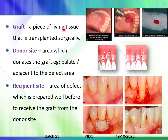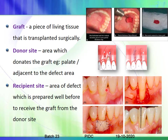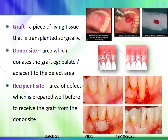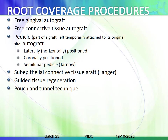A graft is a piece of living tissue that is transplanted surgically — for example, a small piece of living tissue transplanted from the palatal area to the site which is needed. The donor site is the area where the graft is donated, such as the palate. The recipient site is the area of the defect, which is prepared to receive the graft. The material taken is an autograft when taken from the same patient.